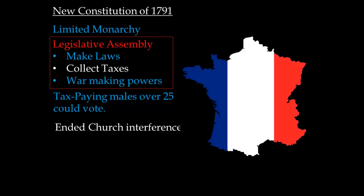A major step was that it ended church interference in government. If we think back, the church and the clergy were the first estate — pretty much the highest up besides the king. Overall, it reflected the Enlightenment ideas of the time. We now see John Locke's Enlightenment ideas, and those of Rousseau and Montesquieu, not only influencing the American Revolution but also the French Revolution as well.